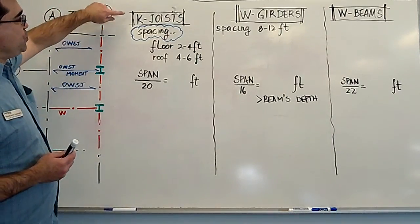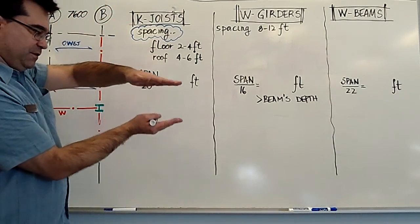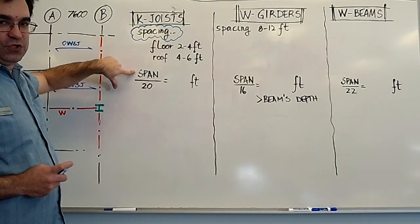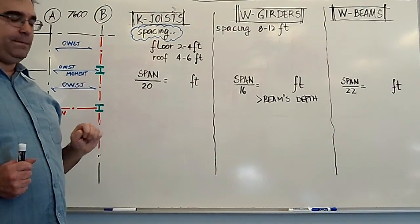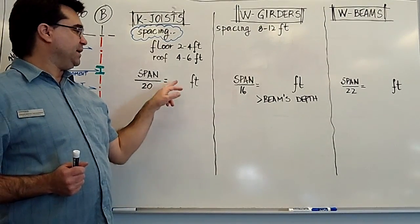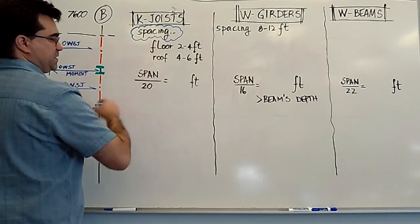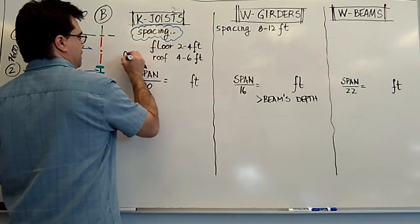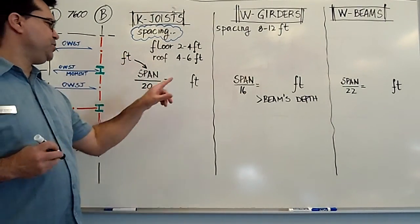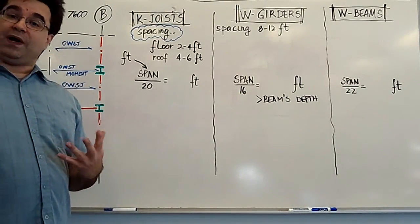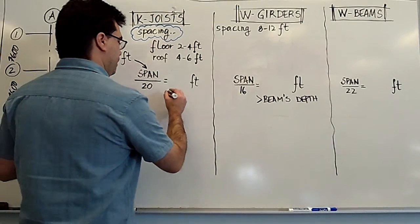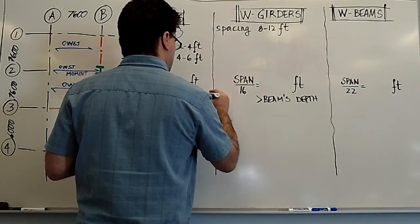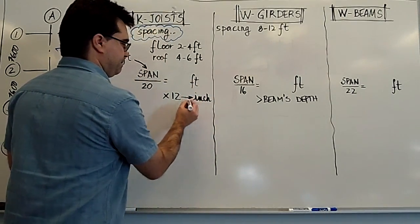So the rule of thumb that you're given is if you're trying to come up with the depth of your K-joists, you take the span of a K-joist and divide it by 20. And then you get the depth of it. And the way it works is that if the span you're using is in feet, then the spacing you're going to get is in feet. And if you want it in inches, then you have to multiply by 12 to get it in inches.